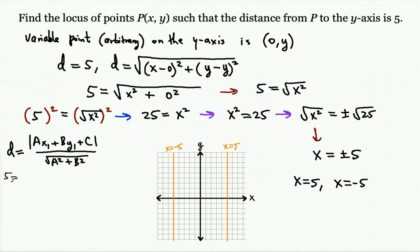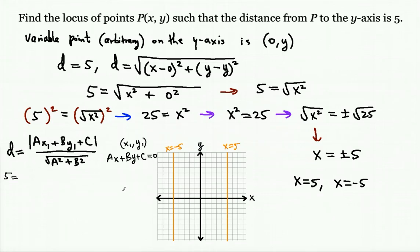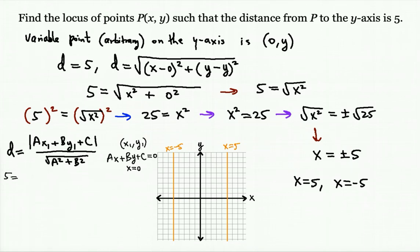We're talking about a line and a point, where the line is written as Ax + By + C = 0 and the point is (x₁, y₁). The point x₁, y₁ will be on either of these two lines, and the line's A, B, C coefficients come from the Y-axis equation, which is x = 0. Comparing: the A value is 1 (it's 1·x).